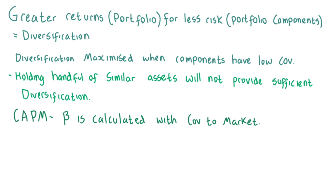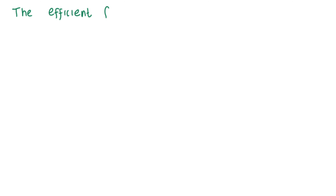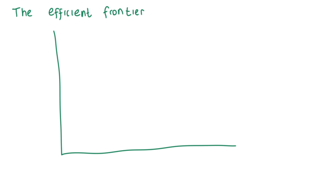Covariances have significant applications in finance and portfolio construction. For example, the CAPM, which we've looked at in a former video, is used to calculate the expected return of an asset. One of the model's key variables, beta, is calculated using the covariance of the asset to the market.